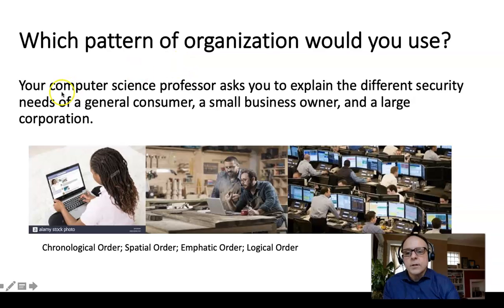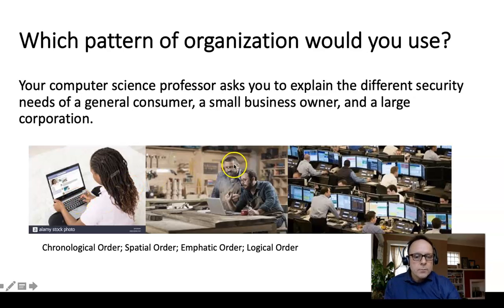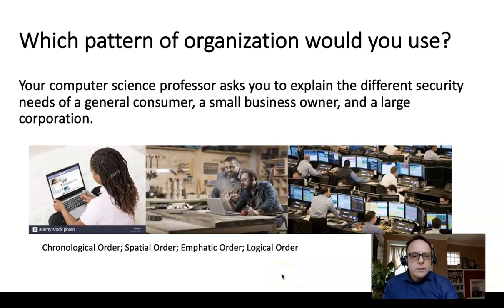Your computer science professor asks you to explain the different security needs of a general consumer, a small business owner, and a large corporation. Would you use chronological order — first this happened, then this happened? Spatial order — on the left side there was a computer, on the right side someone trying to steal your information? Emphatic order — this is most important? Or logical order — moving from general to specific? Pause if you want to think about it. There's no right or wrong answer; you could make a case for almost any of these.